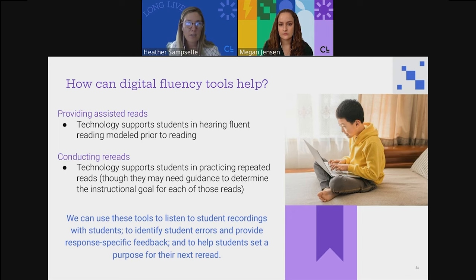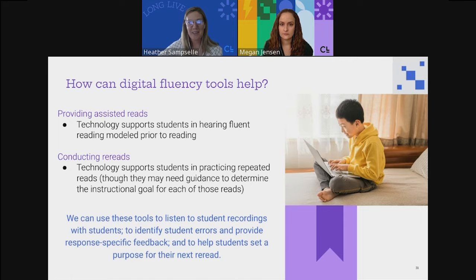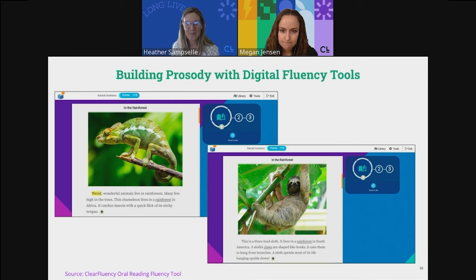The second way digital fluency tools help is by supporting rereads. Students need different types of supports and practice to conduct rereads effectively. Technology can support students by allowing them to listen to their recordings, begin to identify errors themselves — either through feedback the technology provides or by listening to themselves read — and then help set specific goals for the next reread. How confident can our readers get when they can hear themselves improve time after time through a digital platform?